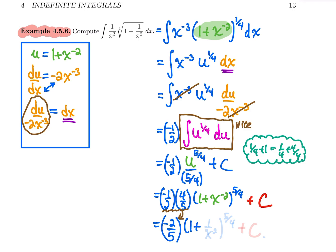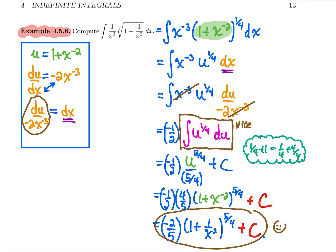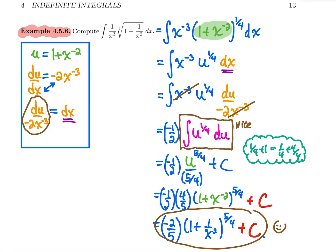And if you don't like negative powers, you can write it as a fraction: one over x squared, all to the power five over four, plus c. That's your final answer. As a check, if you compute the derivative of this answer using the chain rule, you will get back the original integrand. That's it for this example.